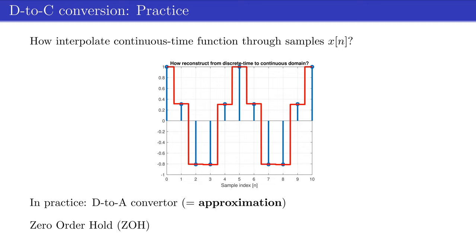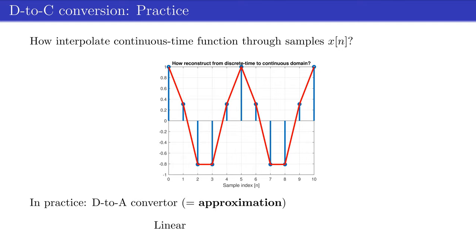There are many different d-to-a converters. The simplest one is such that for each new sample x of n, the value of the sample is hold during ts second, which is a so-called zero-order hold approximation. The result is a continuous time staircase curve. The approximation of the linear d-to-a converter is somewhat better compared to the zero-order hold case. And as mentioned before, all converters which are used in practice are approximations of the ideal converter.